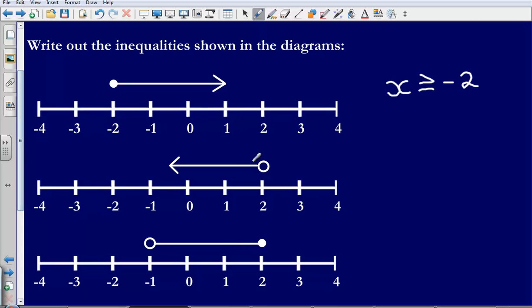Next one, we have got a hollow point, so it does not include the number 2 and here we are saying that it is less than 2. So x is less than 2. If it was coloured in we would say that it is less than or equal to 2. It is not coloured in so we are just saying that x is less than 2.